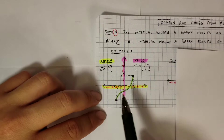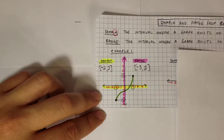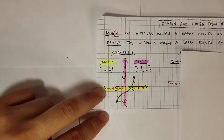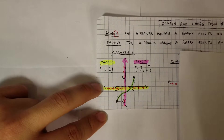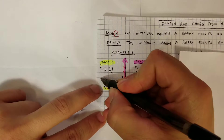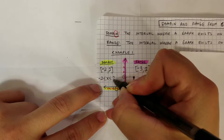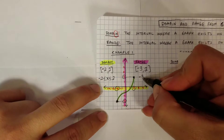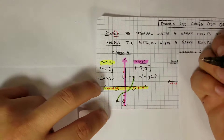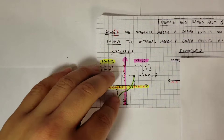So domain is from left to right on the x-axis, and range is from the bottom to the top of the graph. They can give you domain and range in interval notation or as an inequality. A closed circle means a line under the inequality sign. So for this example: domain as inequality is -2 ≤ x ≤ 2, and range is -3 ≤ y ≤ 2, because y goes in the middle.